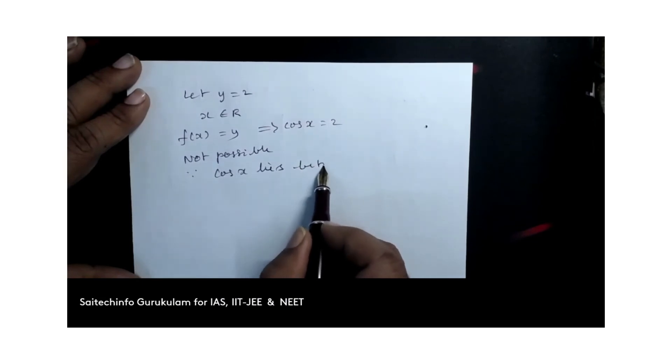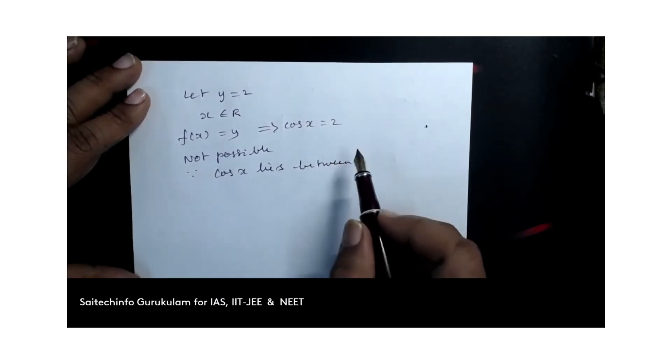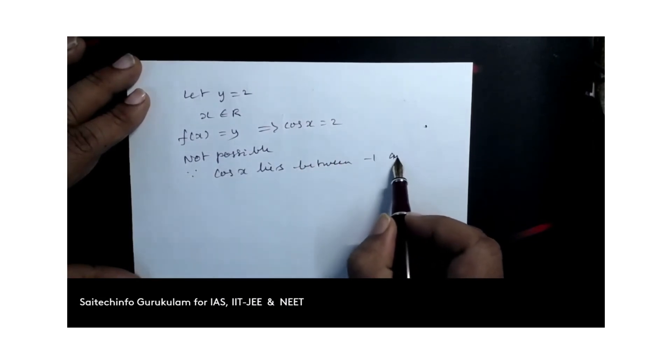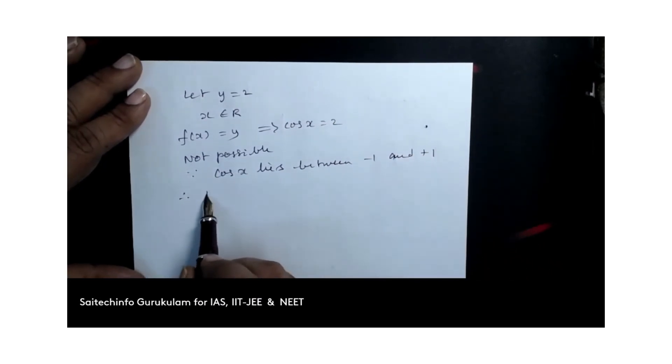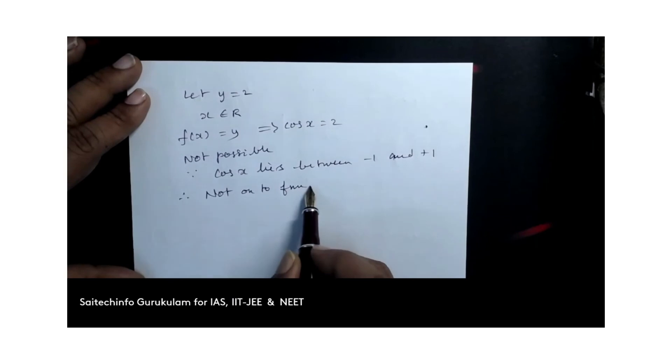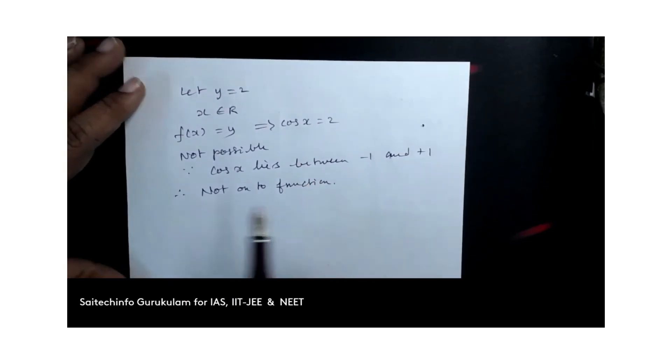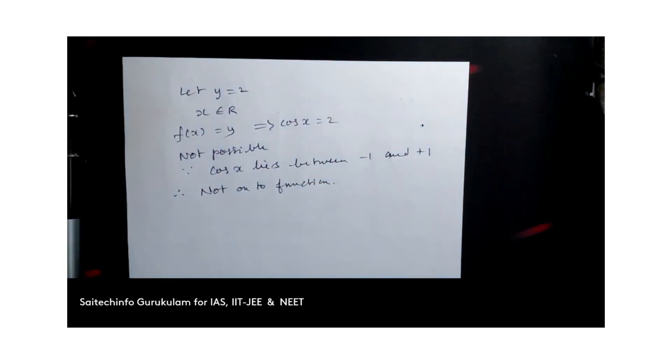And that's why it is not onto function, because cos x lies between minus 1 and plus 1. So this is not onto function.